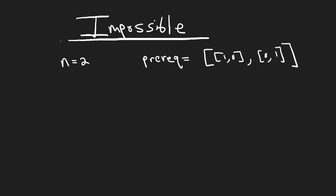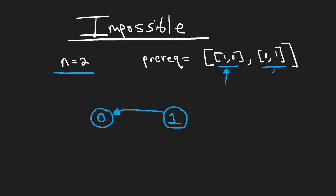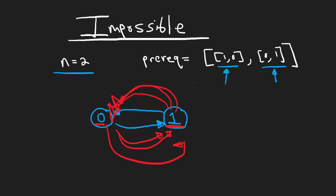Now let's look at an example where it's actually impossible. We're given n equals two with two prerequisites: one, zero and zero, one. The first means to finish course one, you must complete course zero first. The second means to finish course zero, you must finish course one first. The problem is obvious — there's a cycle. Neither course can be finished, so we return false.